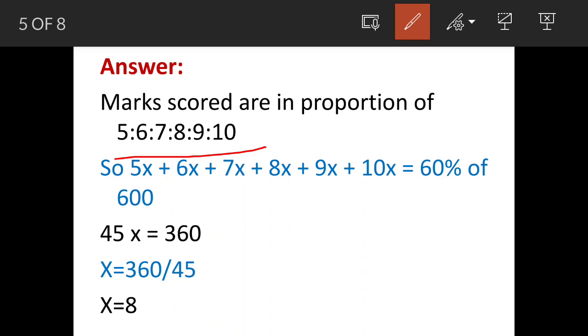Now let us assume marks are X. So each proportion multiply by X and sum them up, and this should add up to 60 percent of 600. That means if you add here, 45X will be 360.